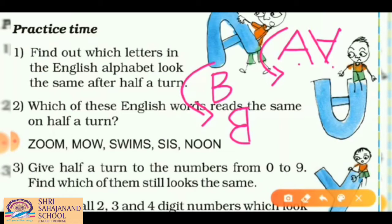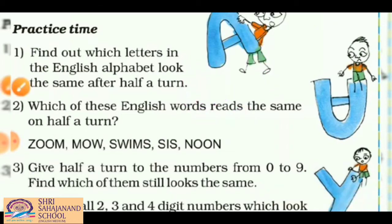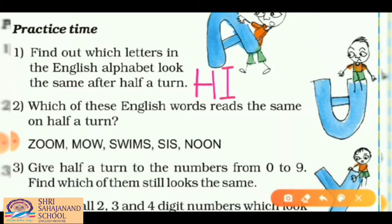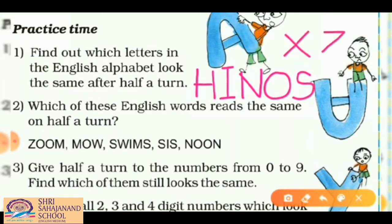The letters which look the same after a half turn are: H, I, N, O, S, X, and Z. These letters look the same as their originals when given a half turn. You can try writing their half turns yourself to verify.